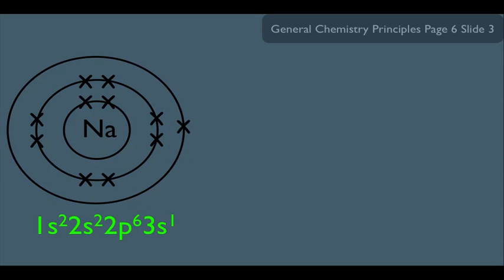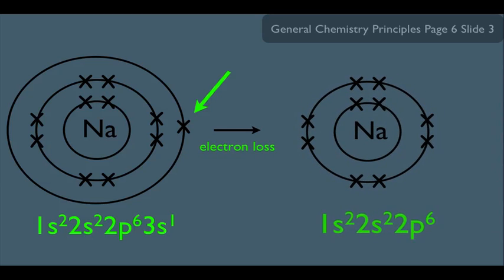And notice he has a 3s1, which means he has a third shell with one electron in it. Now notice he does have in his second shell the eight electrons, but it's that last electron in the three shell that's making him not very stable. So what happens is there's an incentive for sodium to simply lose that electron to become this right here.